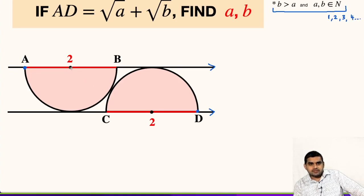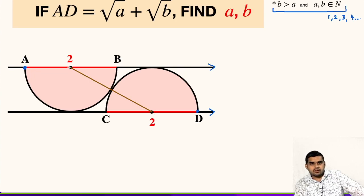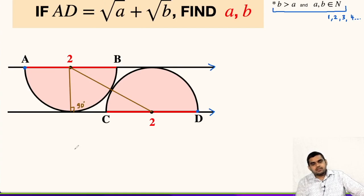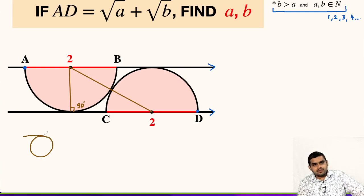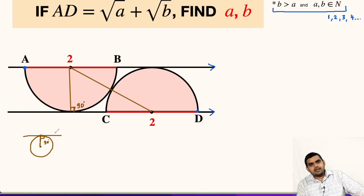In order to solve this question, first of all let us join these two points, that means the centers. Also, we will drop one perpendicular from the center of the first semicircle. This angle will be 90 degrees. The reason is we have a theorem: if this is the tangent to the circle, this point represents the center of the circle, and this is the point of contact, then if we draw a line segment joining the point of contact with the center, this angle is always 90 degrees.